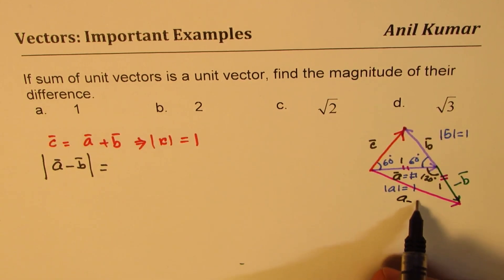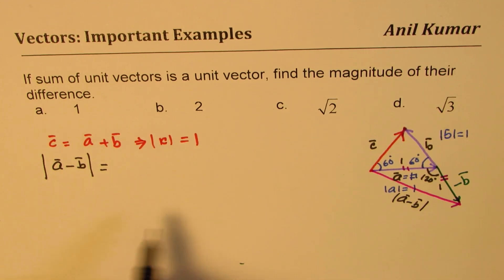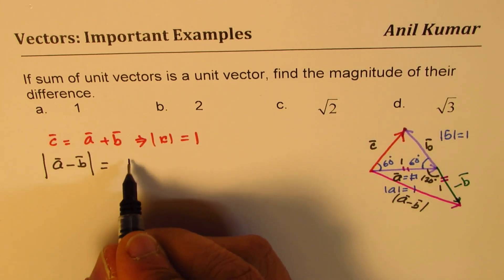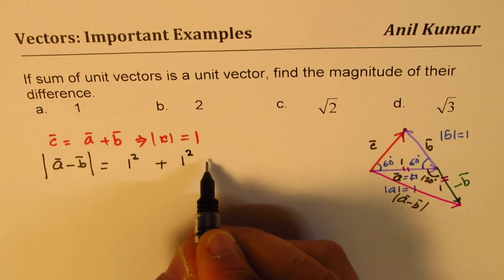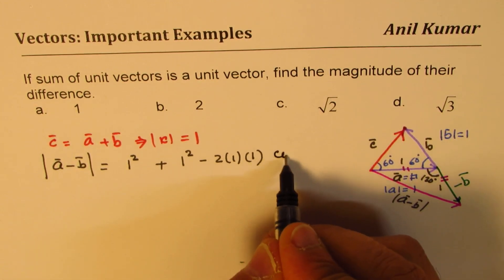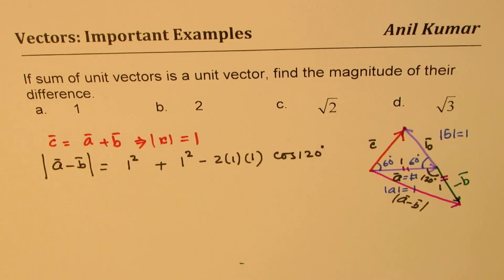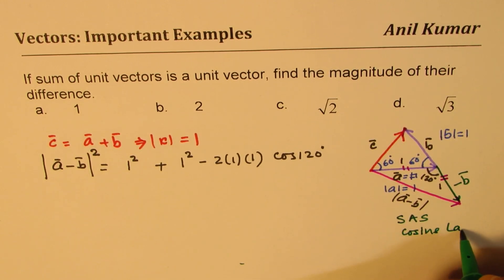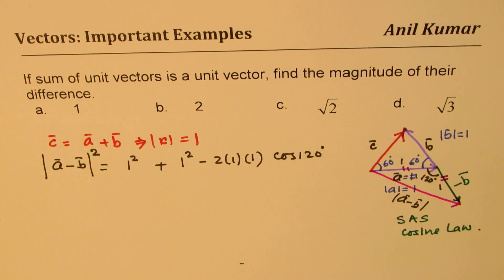And this becomes our A minus B. Is that clear to you? Magnitude. So using cosine law here, what do we get? We get A squared, which is 1, plus B squared, which is 1, minus 2 times A times B times cos of angle 120. So that is how we actually get square of this difference. We have applied cosine law. We have SAS. We have two sides. So we can apply cosine law to get the difference.